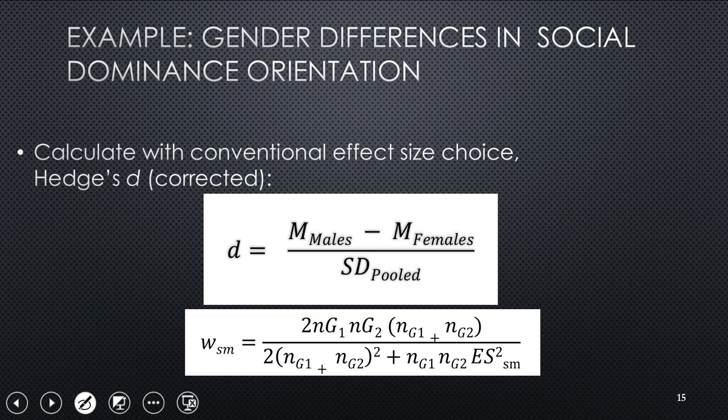So you can start out with the conventional effect size statistics. So there's our SMD. And by the way, this is a mistake. That apostrophe is in the wrong place. Hedges is plural. Larry Hedges is his name. So you've got males and females and you divide by the pooled standard deviation. There's a weight we can calculate for it that's basically sample size.